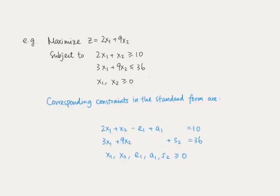Let's refer to the following example. We wish to maximize the objective function z equals 2x1 plus 9x2, subject to the constraints 2x1 plus x2 greater than or equal to 10, 3x1 plus 9x2 less than or equal to 36, and having both x1 and x2 to be non-negative.